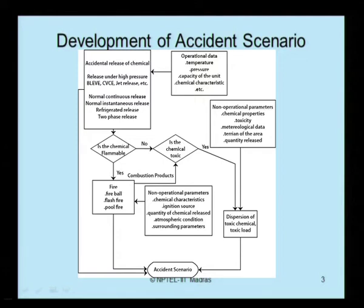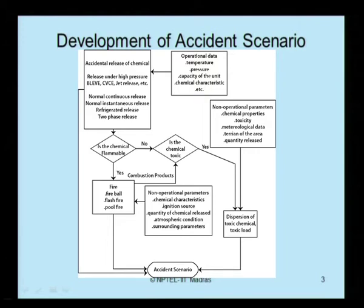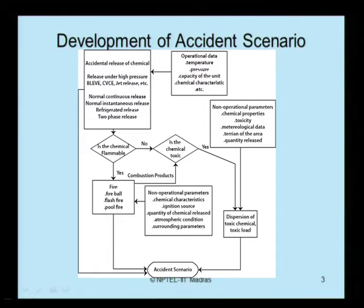Once a scenario for an accident is created, a chemical is released. If the chemical is flammable, it can cause fire — there can be a fireball, a flash fire, or a pool fire. If the chemical is not flammable, then we ask: is the chemical toxic? If toxic, we discuss dispersion models. If non-toxic, we look into the combustion products obtained from the fire or flammable release. Factors affecting this include non-operational parameters such as chemical characteristics, source of ignition, quantity of chemical released, atmospheric conditions, and surrounding parameters.